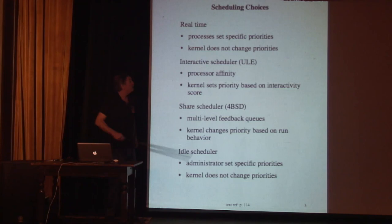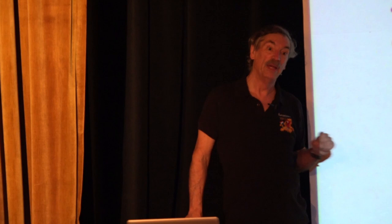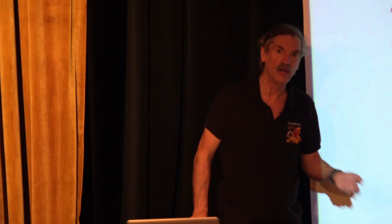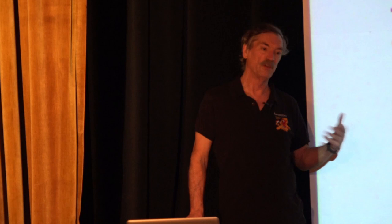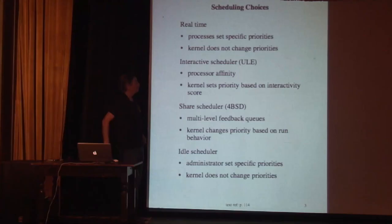For real-time priorities, processes set the specific priority and the kernel doesn't second-guess them — it just runs with that. The effect is that if you set a real-time priority and that process goes into an infinite loop, the system will effectively look like it's locked up. The kernel can only run interrupt threads; none of the top half of the kernel or user level will ever run. So if you're trying to fix something from a shell, you're out of luck. You must be very careful with real-time priorities not to get into an infinite loop, and you must give up the processor periodically.